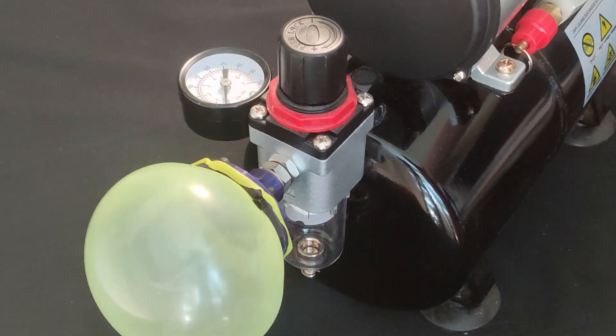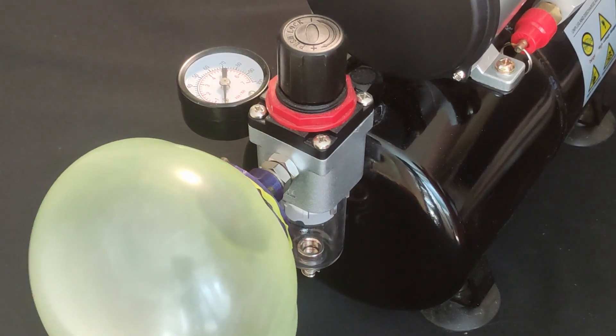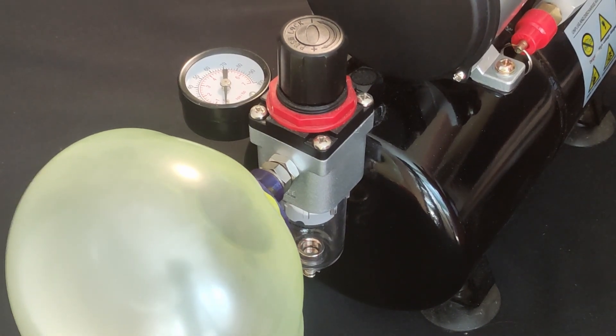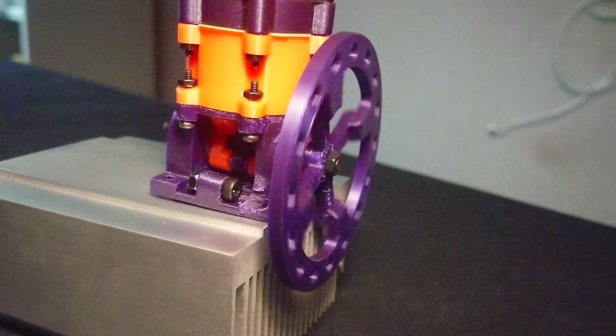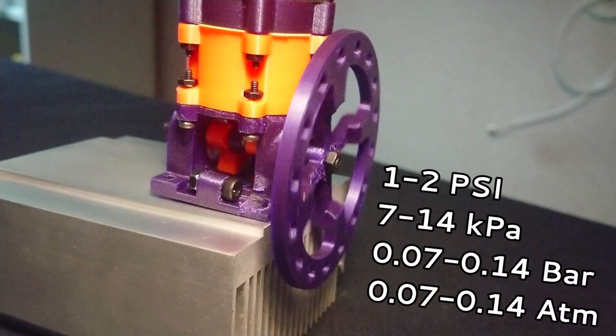However, instead of a rubber sheet, the diaphragm material was chosen to be a party balloon. This allows the engine to work at pressures as low as 1 to 2 psi.